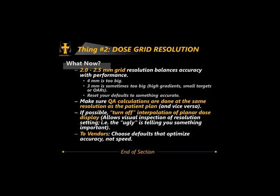Some planning systems have a default grid resolution of 4mm — and I will go on the record saying that's a poor default. A vendor may argue they let the user set it to whatever they want — and there's some truth to that. But the problem is users assume the planning system defaults are adequate, and often they are not. If you can turn off visual interpolation of planar dose display — the ugly result could be telling you something important.